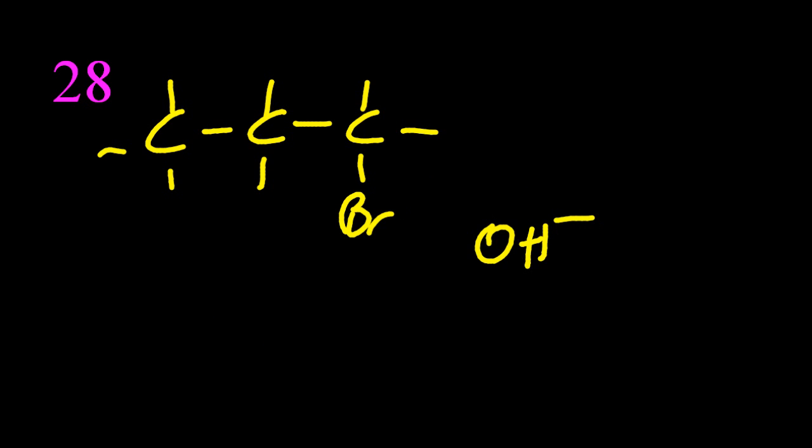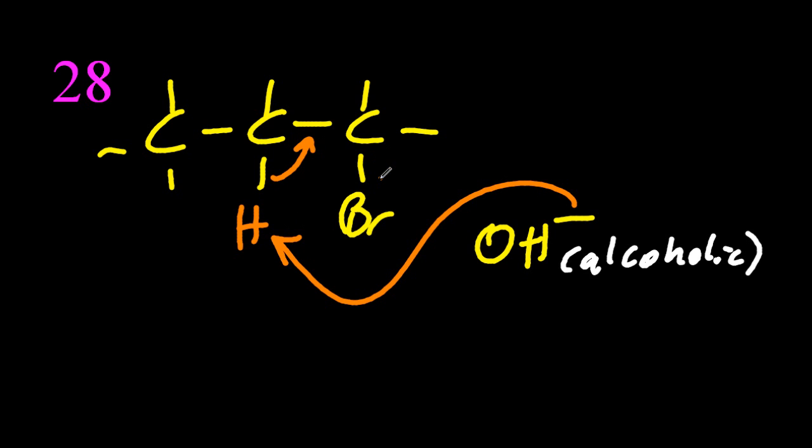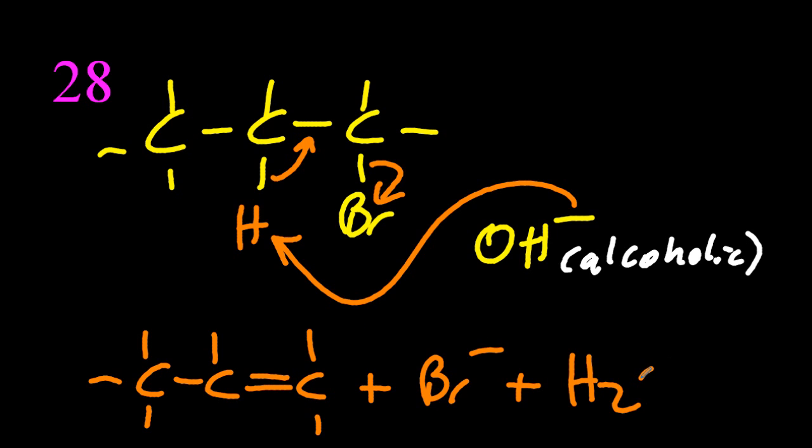This is nasty. An elimination reaction. If you've got alcoholic hydroxide, this is a one-step process. It's known as E2. Now, it's not clear to anyone if you need to know that E2 is the mechanism there.